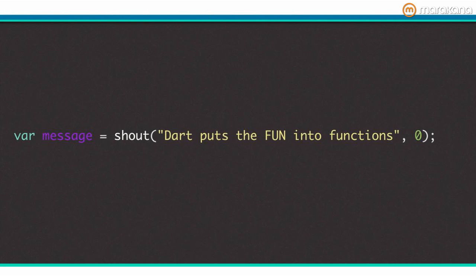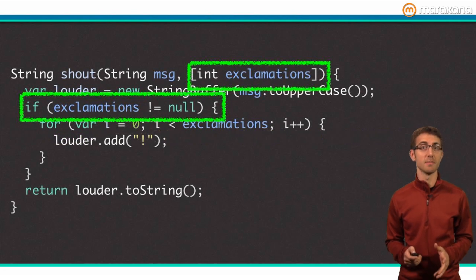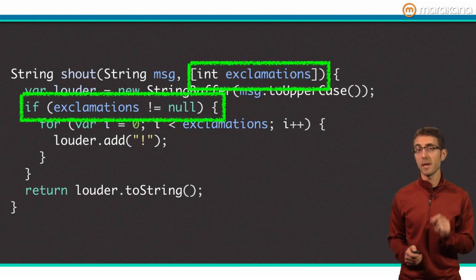However, it is hard to read this line of code. A casual observer may not know what this magic zero is. Also, wouldn't it be better to simply leave off the second parameter if you don't want to use it? Luckily, Dart has a way to make this better. Wrap one or more parameters with square brackets to make them optional. Here's an example. Notice how the function now checks if exclamations is null, which is the value of the parameter if it was not provided by the caller.